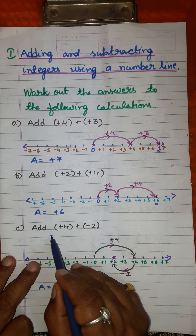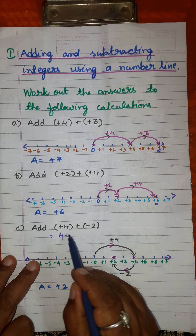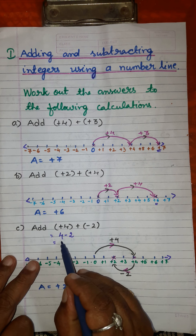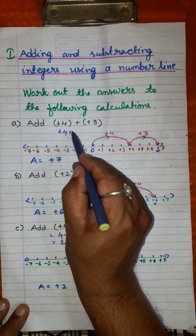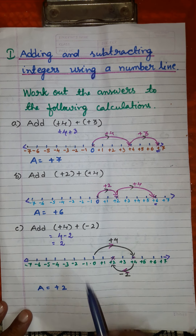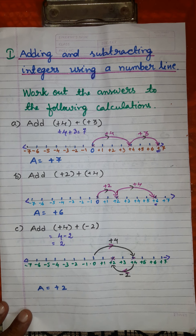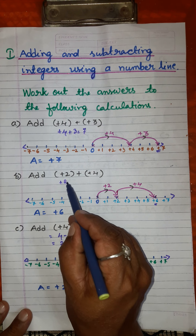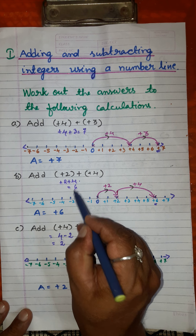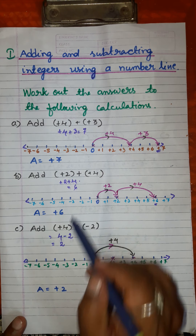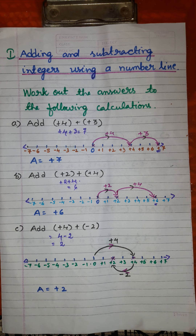Here you have to do some simplification. Plus into plus is plus, so plus 4 plus plus 3 gives 7. Plus into plus is plus, so plus 2 plus plus 4 gives 6. This is how you get the answer by drawing the number line.